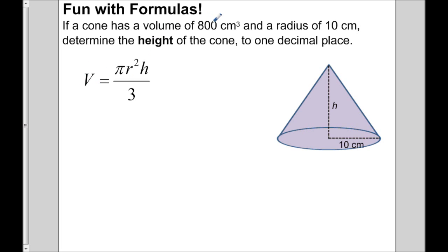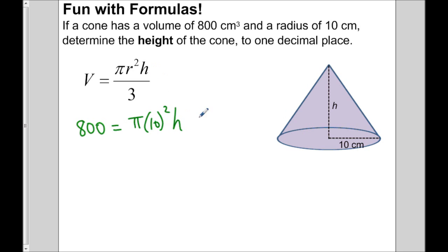The volume is 800, so I can replace V with 800. Equals pi — pi is just pi — the radius is given as 10 centimeters, so I write 10 squared. I don't know the height, so I leave it as h, and then divide by 3. I need to isolate h. One thing we can do is figure out what pi times 10 squared divided by 3 is — we can simplify that expression. Let's grab a calculator.